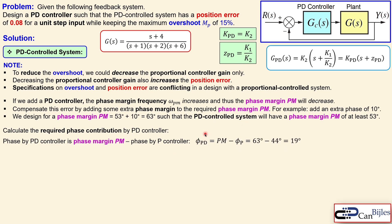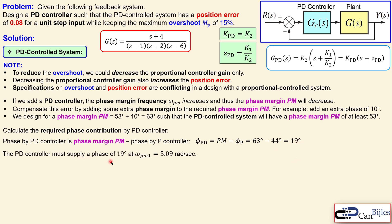The required phase contribution by the PD controller equals the required phase margin minus the phase already provided by the P controller. With a safety margin of 10 degrees: 63 − 44 = 19 degrees. So the PD controller must supply 19 degrees of phase at the frequency omega_pm = 5.09 radians per second.